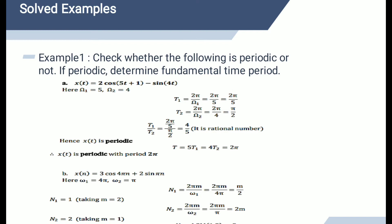Mathematically, a continuous time signal x(t) is called periodic if and only if x(t + T) = x(t) for all t, where t ranges from minus infinity to infinity. Capital T is a constant representing the period. The smallest value of T which satisfies this condition is called the fundamental period of x(t).